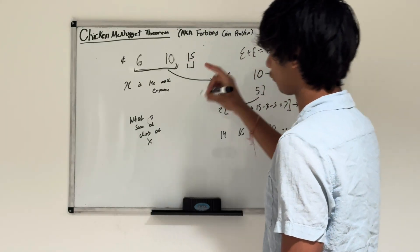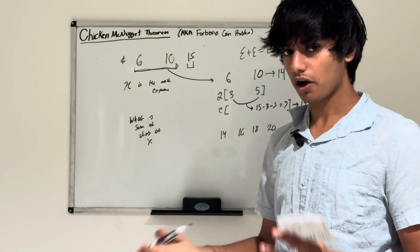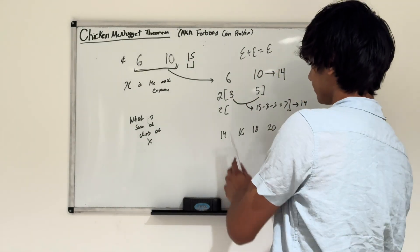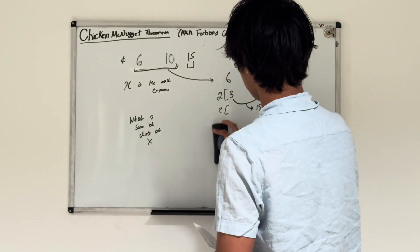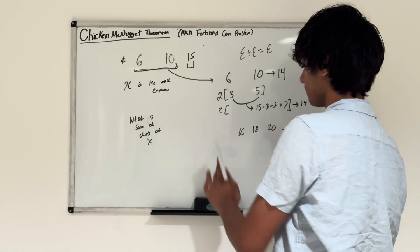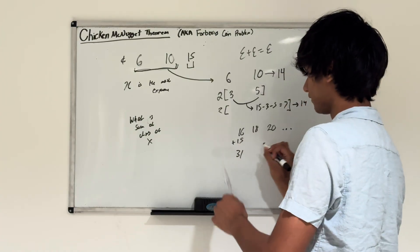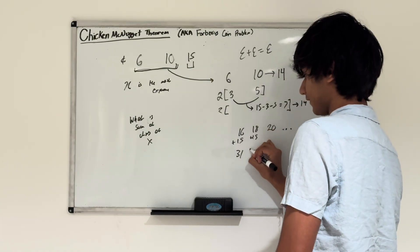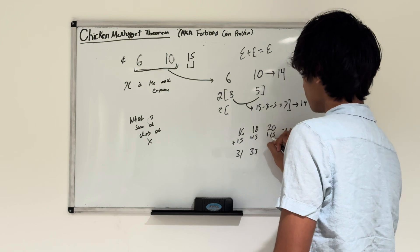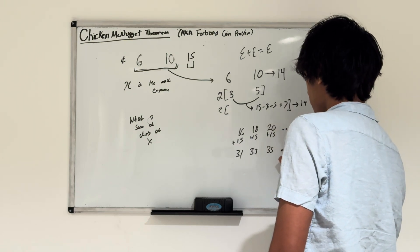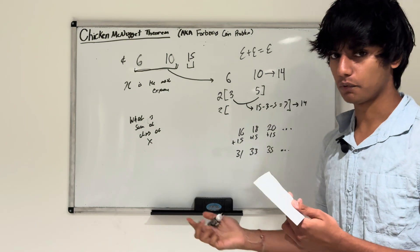But now we have 15, so we can start making odd numbers. Since 16 is the smallest number we can make with 6 and 10, if we add 15 to 16, we get 31. So we can make 31. Adding 15 again, we can make 33, then 35. Now we can make every odd number beyond 31.